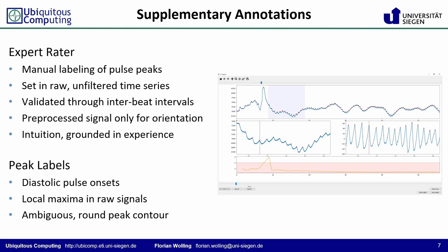These labels are set within the raw, unfiltered time series to exclude the influence of filtering from the beginning. A second panel allowed the expert, however, to glance at the detrended and smoothed signal for orientation. Due to the round peak contour, baseline wander, and a large portion of noise, the identification of the exact peak positions is ambitious. Since the peak is not always located at the exact local maximum, labeling is also subject to intuition grounded in the expert's experience.